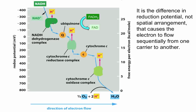The movement of electrons down the electron transport chain is basically unidirectional. A molecule like ubiquinone will not be able to donate electrons back to the NADH dehydrogenase complex, because NADH dehydrogenase has a more negative redox potential than ubiquinone, making it a poor electron acceptor from ubiquinone. All electrons move from a molecule with a really high negative redox potential to another molecule with a more positive redox potential.